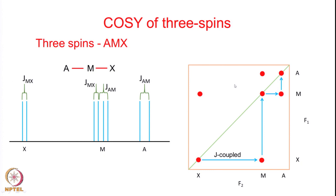This produces an overall COSY spectrum with a correlation from A to M as a cross peak, and diagonal peaks between A and M. The cross peak between M and X arises because of the coupling between M and X. Each of these cross peaks will have a fine structure - along each axis the spin appearing on that axis will show a fine structure along that axis, depending on the coupling network.